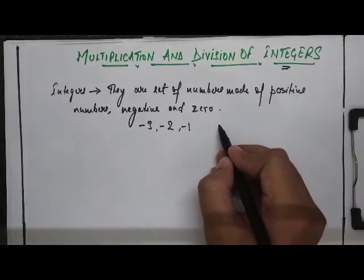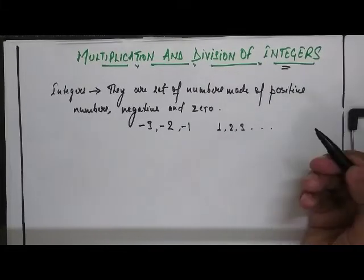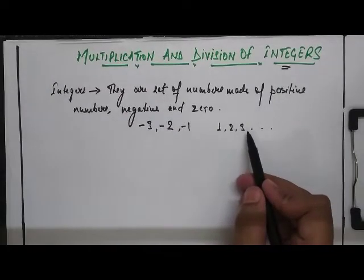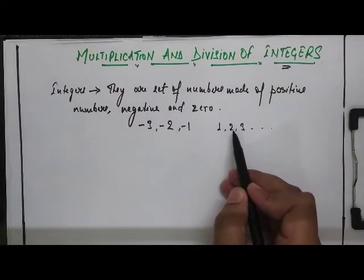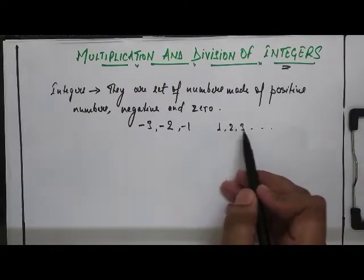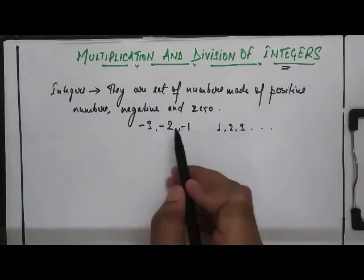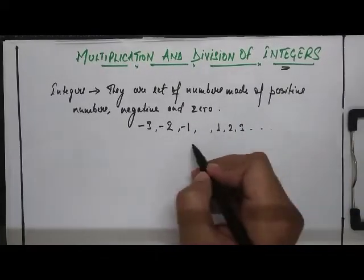If I say let's take number 1, 2, 3 and so on. We can see all these numbers are positive numbers. Why? Because it's very clear that in front of each number there is no sign and when there is no sign, we just assume that the sign is positive. So these are positive integers or positive numbers.